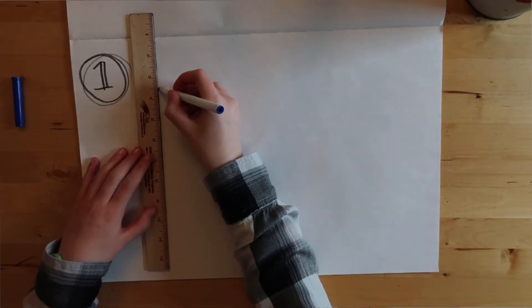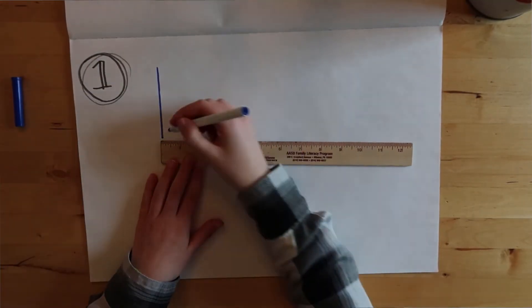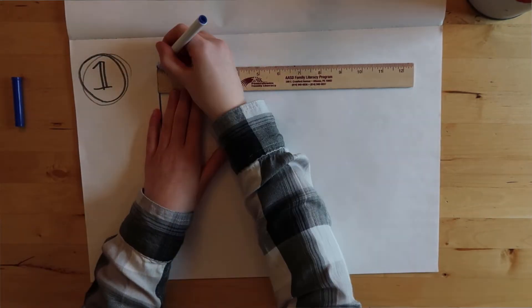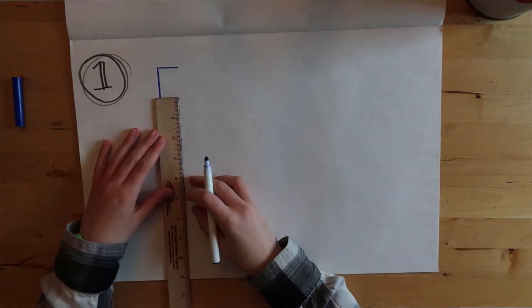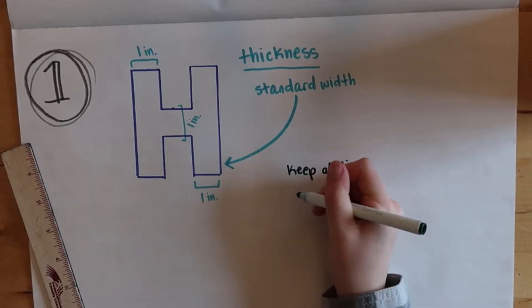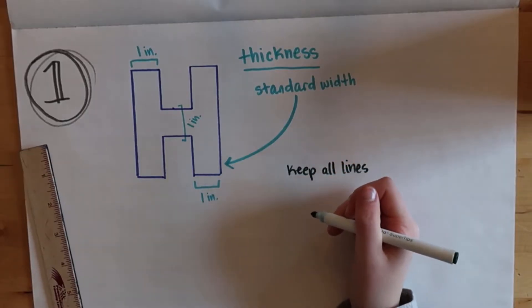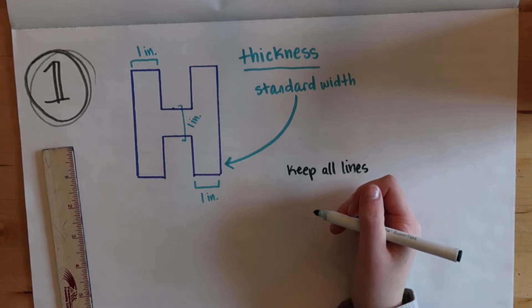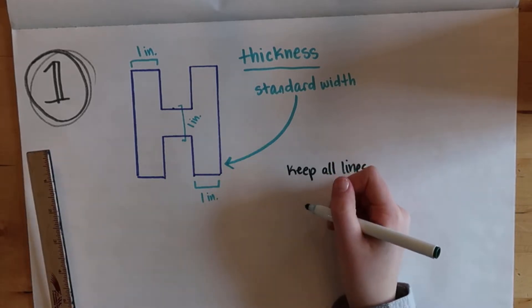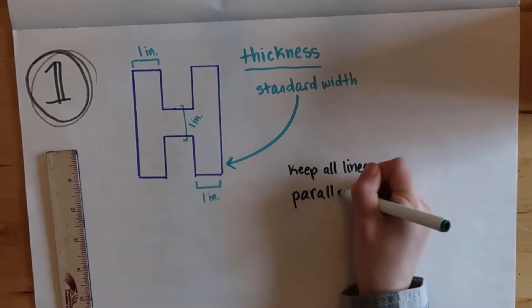Okay, so first a big thing of 3D lettering is the actual block letters themselves, not just the backdrop shadow thing. So first let's focus on the block letters. What you want to do to make them look a lot better is make all of the thicknesses of the line—you want to keep those all the same width.